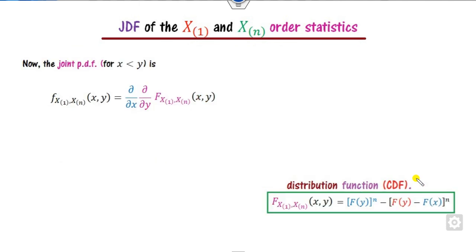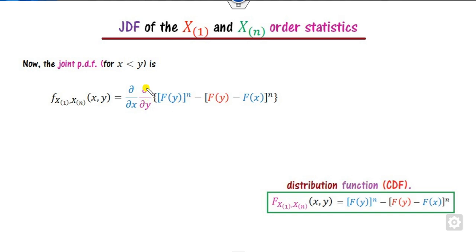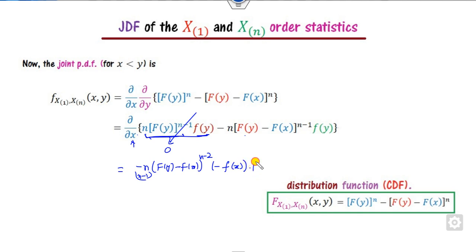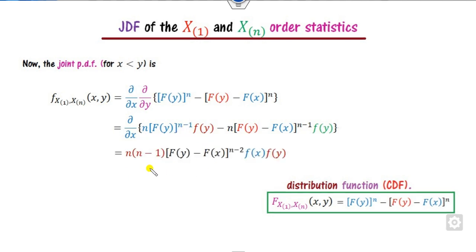Once you know the CDF, you find the joint PDF by taking partial derivatives twice. First take the partial derivative with respect to y: the derivative of the CDF is the PDF, giving n·[F(y) − F(x)]^(n−1)·f(y). Then take the partial derivative with respect to x: the first part becomes 0, and the second gives n·(n−1)·[F(y) − F(x)]^(n−2)·f(x)·f(y). This is the joint PDF formula for X(1) and X(n).